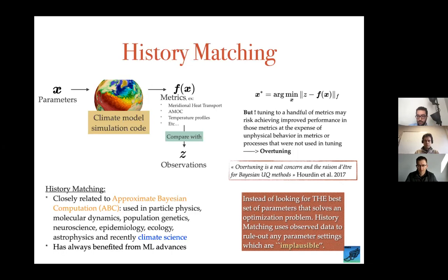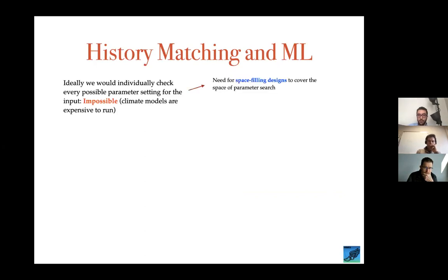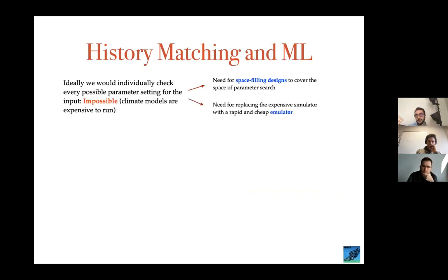One thing that attracted me to history matching is that it has a machine learning component. If you had unlimited computational power, you could naively try all combinations of input parameters and run your models. But climate models are very expensive to run. That's why first you need space-filling designs — instead of trying all combinations, you select some in a way that fills your input parameter space as best as possible. Second, you need to replace the expensive simulator with a rapid, cheap emulator or surrogate model.